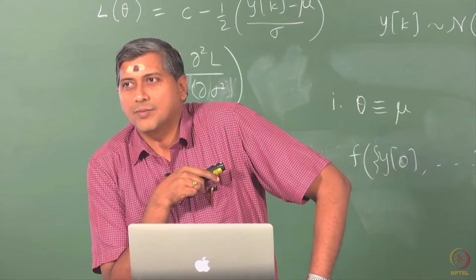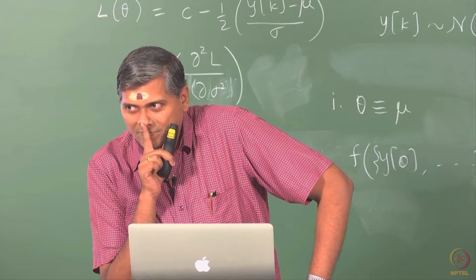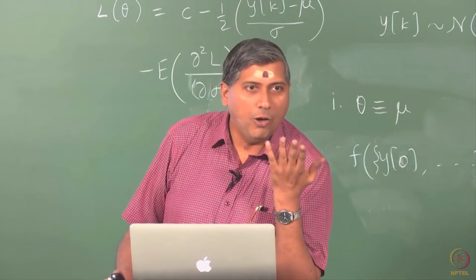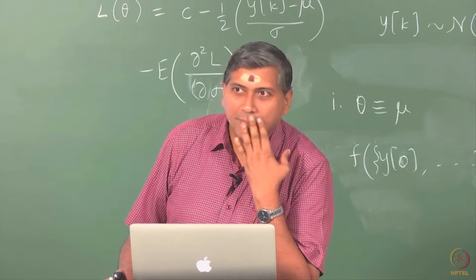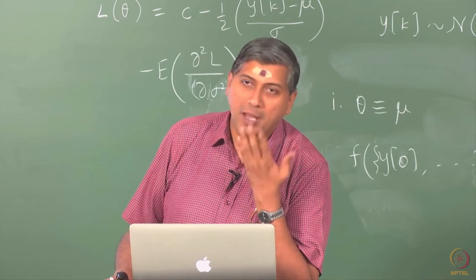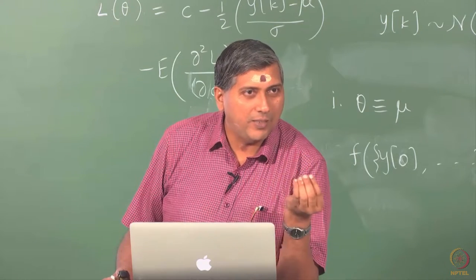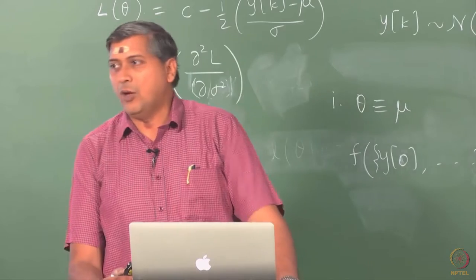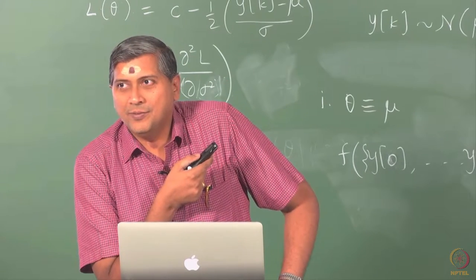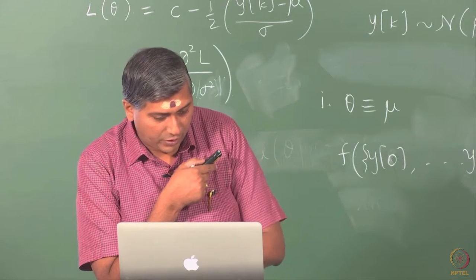An off-diagonal value of 0 means the parameters can be estimated independently — they are orthogonal. But recall that when estimating σ², we say we need an estimate of the mean first. The classical expression for estimating variance is 1/(n−1) Σ(yₖ − ȳ)², where ȳ is the estimate of the mean. So unless we estimate the mean, we cannot estimate σ² — or so it seems.